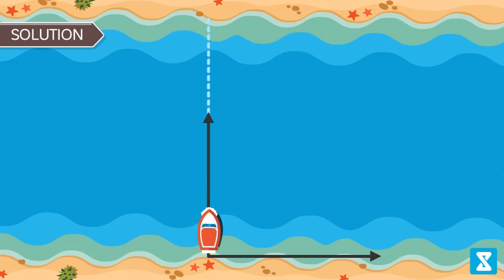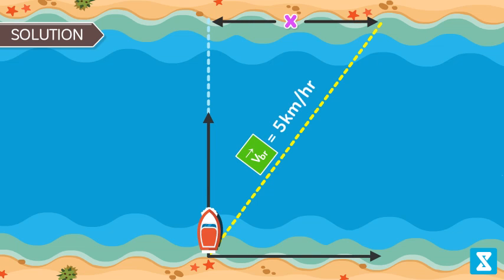Solution: We are given velocity of boat with respect to river VBR equal to 5 km per hour, width of the river W is equal to 1 km, minimum time to cross the river T minimum is equal to 15 minutes or 1 by 4 hour. The shortest possible path comes when the absolute velocity of boat is perpendicular to river current.